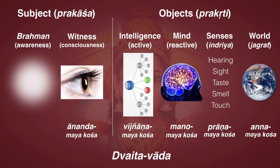Today we're going to talk about these different states of consciousness. To have consciousness, you have to have a subject and you have to have objects. Brahman is the first subject, and that is pure awareness. Then there's the witness, which is the beginning of consciousness, situated in the Ananda Mayakosha. Then there are the objects: Intelligence — the Vijnana Mayakosha; Mind — the Mano Mayakosha; the Senses — the Prana Mayakosha; and the world — the Anamaya Kosha, including the body and possessions and all that kind of gross stuff.